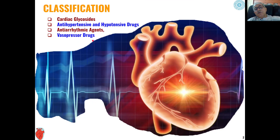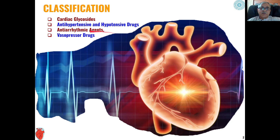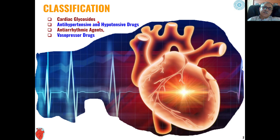As you know, the cardiovascular drugs have been classified into four types: cardiac glycosides, anti-hypertensive and hypotensive drugs, anti-arrhythmic agents, and vasopressor drugs. These first three categories of cardiovascular drugs we have already discussed in the first two lectures.